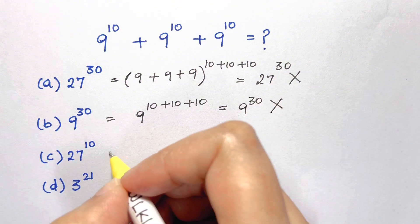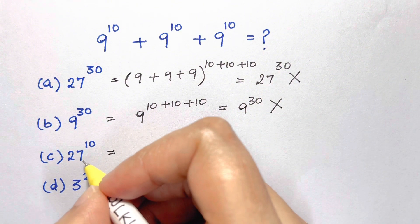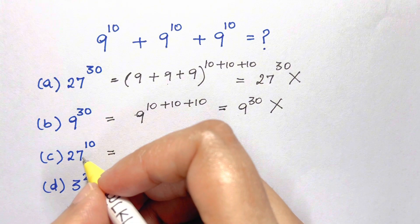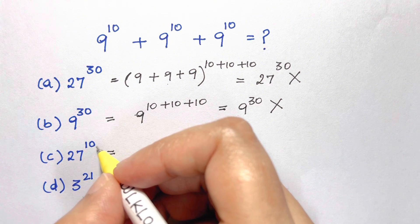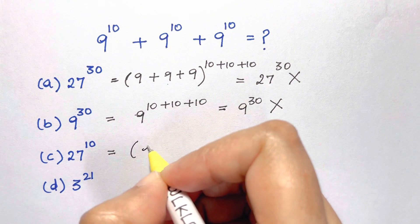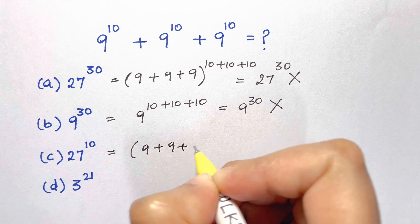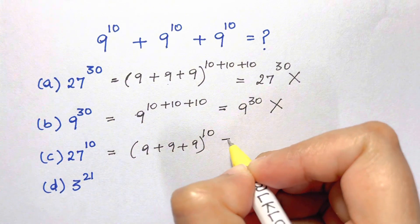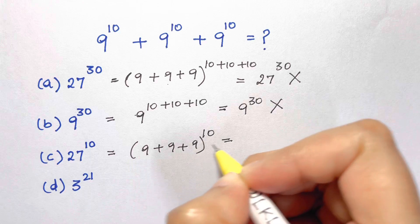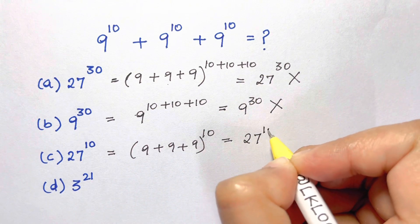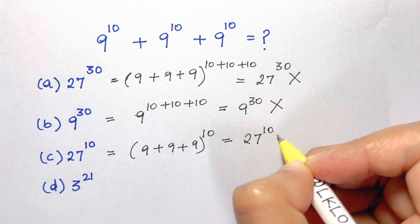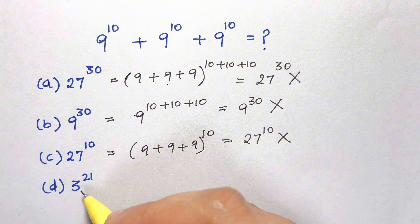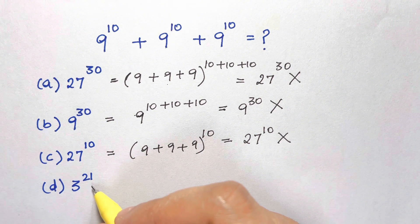So we have to find the answer in option C: 27 to the power of 10. This is the sum of all the bases to one of the powers — 9 plus 9 plus 9 is 27, to the power of 10. But this is also wrong. So D is suspected to be the correct answer.